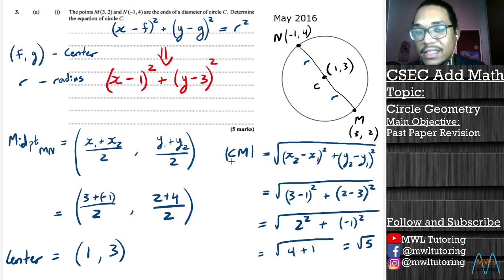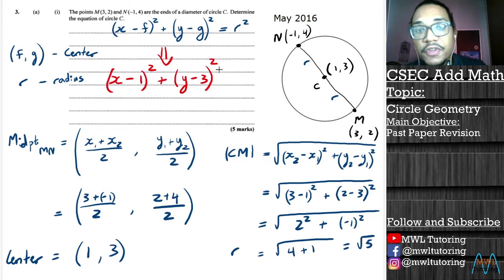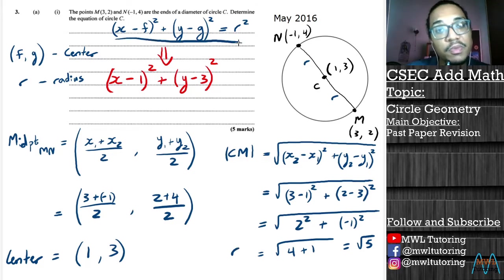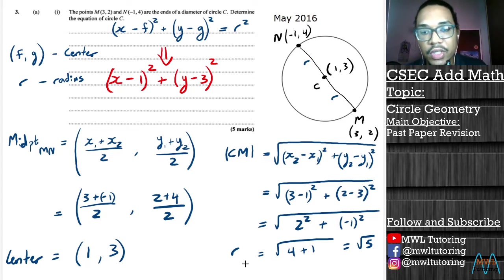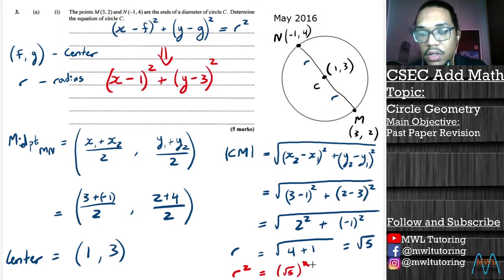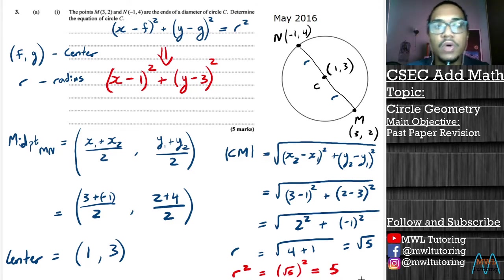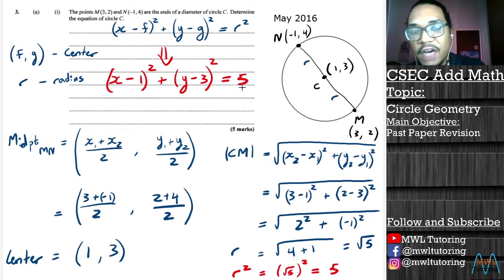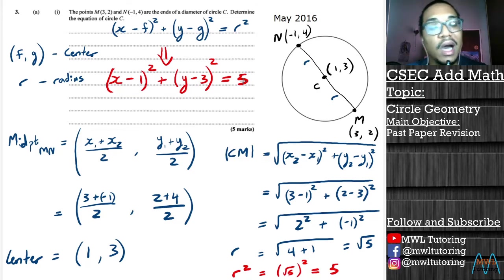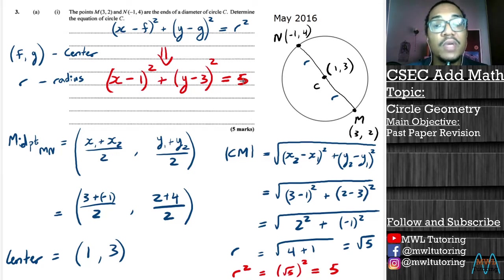Remember what the length CM is — it is the radius. So our radius is √5. But for the equation of the circle we don't put in the radius alone, we put in r squared. If we square √5, we get 5. So our equation of the circle is: (x - 1)² + (y - 3)² = 5. There you have it as the equation of the circle, and we see how the diagram helps us out.